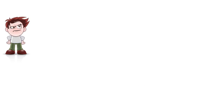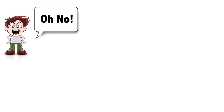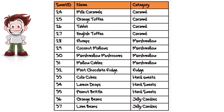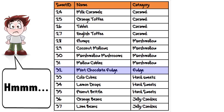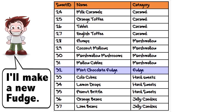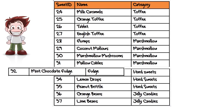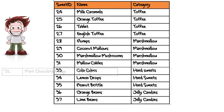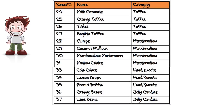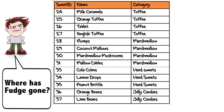There's another problem as well. Bob makes one sweet in the fudge category — his mint chocolate fudge — but it doesn't sell very well, so he decides to stop selling it and make a different kind. If he deletes the record about mint chocolate fudge from his database, he will also delete the fudge category. Whoops, that's not good.